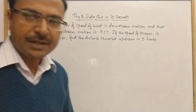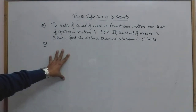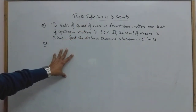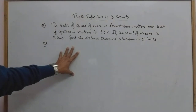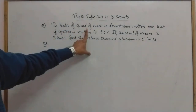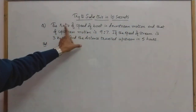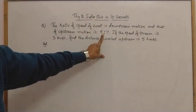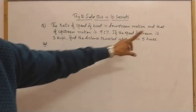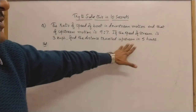Hello friends, here is yet another amazing problem of distance, speed, and time. This question existed in one of the previous year competitive exams and you need to solve it in minimum amount of time. The ratio of speed of boat in downstream motion to that of upstream motion is given as 9:7. It is also given that the speed of stream is 3 kilometers per hour, and you need to find the distance traveled upstream in 5 hours.